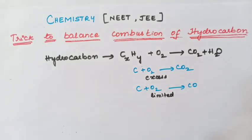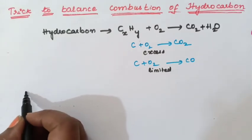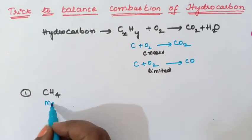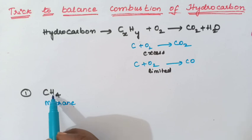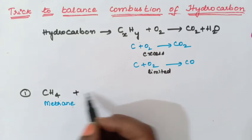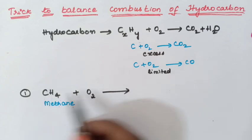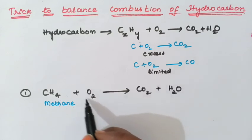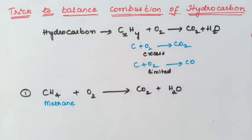Now how do we balance a combustion of hydrocarbon reaction? I will take one example. The first example is methane, CH4. CH4 is a hydrocarbon because there is carbon and there is hydrogen. We are burning it in the presence of excess oxygen. Always remember: combustion reaction will give carbon dioxide and water as the products. Since we are assuming excess oxygen, carbon dioxide is one product and water is the second product.